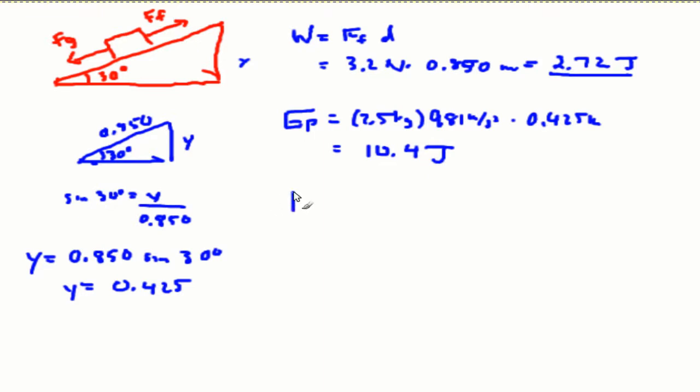So the net work done on this object is equal to the work done due to gravity minus the work done by friction. So it's going to be 10.4 joules minus 2.72 joules, which gives us a value of 7.68 joules.